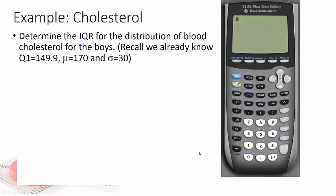So let's revisit our sample with the cholesterol. Now we want to determine the IQR or interquartile range for the distribution of blood cholesterol. Now we already know Q1 is 149.9, mu is 170 and sigma is 30. Now if it's interquartile range, the z score is just going to be, Q3 is just going to be the positive of Q1.